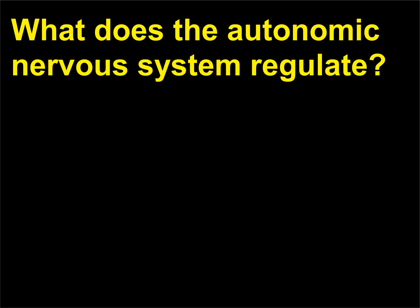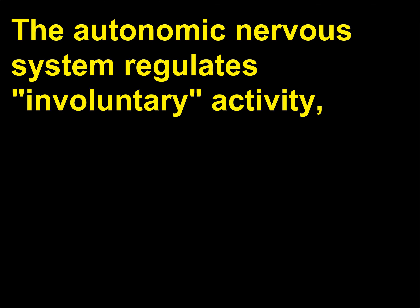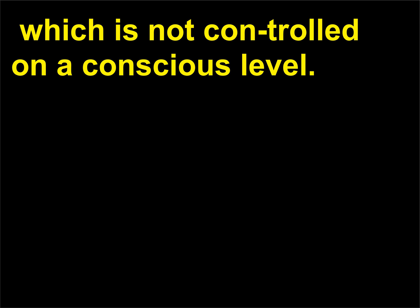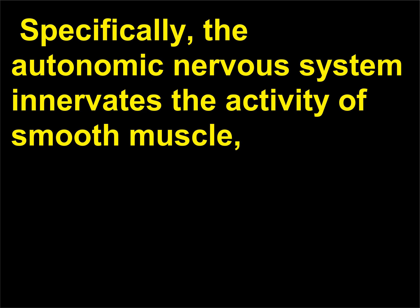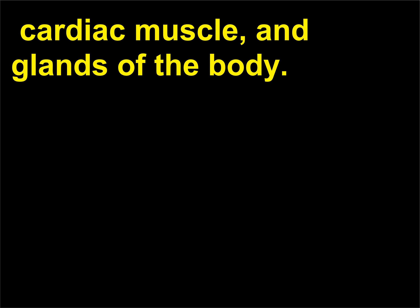What does the autonomic nervous system regulate? The autonomic nervous system regulates involuntary activity, which is not controlled on a conscious level. Specifically, the autonomic nervous system innervates the activity of smooth muscle, cardiac muscle, and glands of the body.